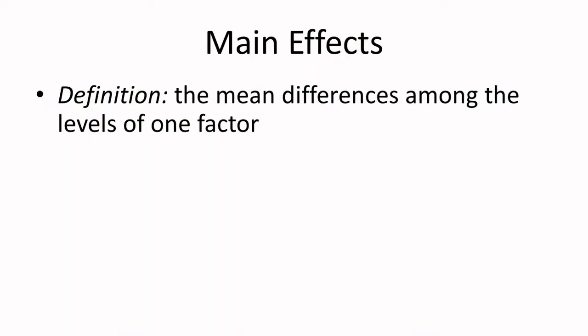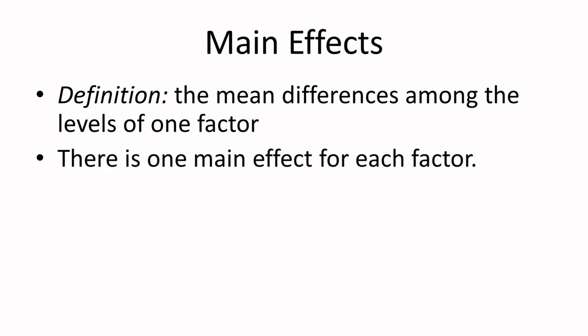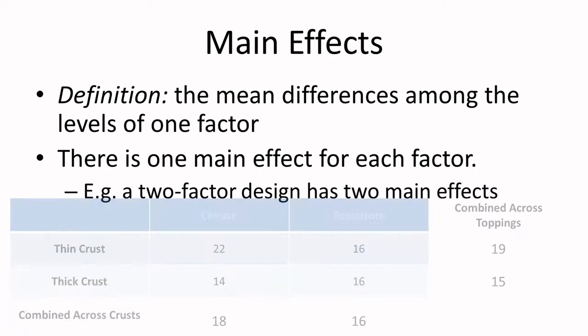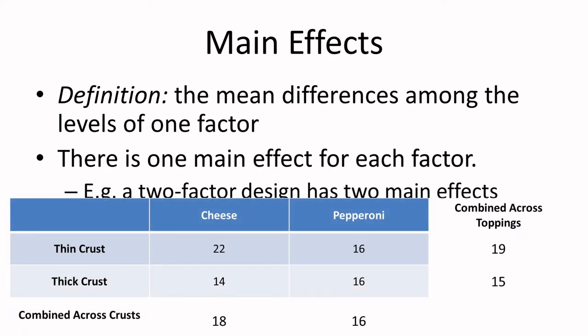When it comes to doing data analysis for a factorial design, you're basically going to be looking at things called main effects. There's also something called interactions, but we'll get to that in a moment. A main effect is the mean differences among the levels of one factor, and for every factor you have in your design there is a potential for a main effect. A two-factor design could have two main effects. Is there a main effect for crust and is there a main effect for topping?